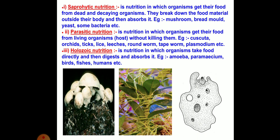Parasitic nutrition is the nutrition in which organisms get their food from living organisms — the host — without killing them. For example, the cuscuta plant climbs over the host plant and takes the food prepared by it. In this way, the host is deprived of nutrition.